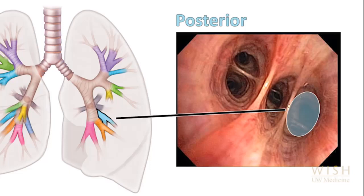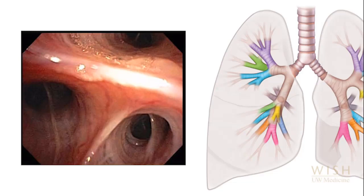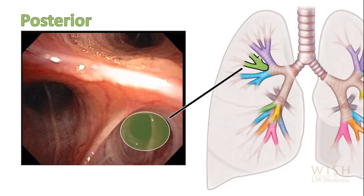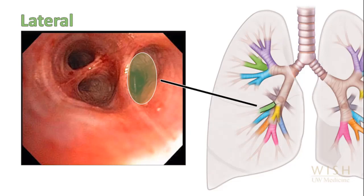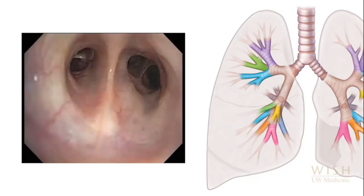The right lung has three lobes. The right upper lobe bronchus takes off laterally from the right main stem and has three segments — anterior, apical and posterior. The middle lobe divides into medial and lateral segments. At the level of the right middle lobe bronchus, the superior segment and medial basal segments are visible. Below this, the right lower lobe bronchus divides into the remaining segmental bronchi — anterior, lateral and posterior segments.